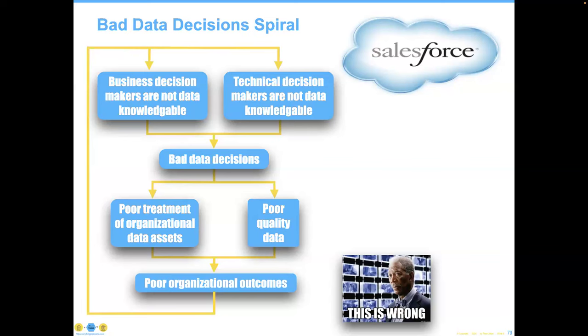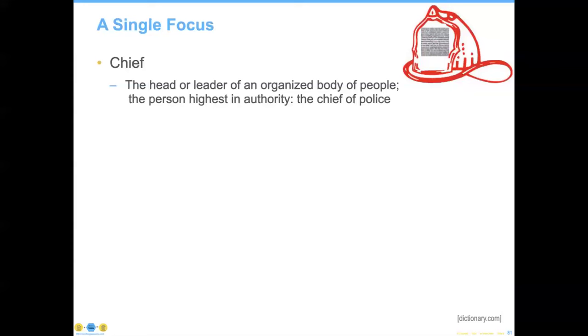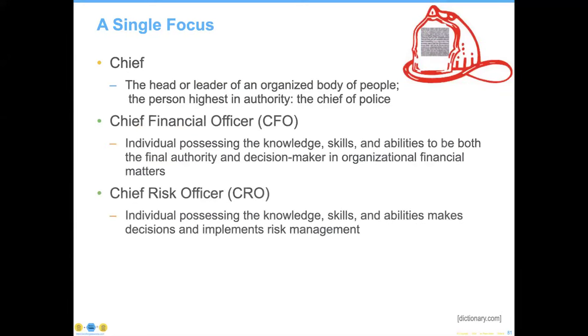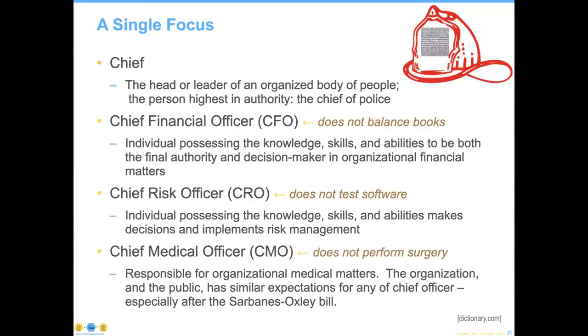We've discovered over time that the more you're able to focus on various aspects of things, the better the outcomes will be. We've discovered that having chiefs like a CFO, a chief risk officer, a chief medical officer are important for organizations as they go through various stages in their organizational development. We've also noticed that singular focus is extremely helpful — the CFO does not balance the books, the chief risk officer does not test the software, and the chief medical officer does not perform surgery.